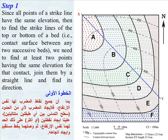Step 1. Since all points of a strike line have the same elevation, to find the strike lines for the top or bottom of a bed — that is to say, the contact surface between any two successive beds — we need to find at least two points having the same elevation for that contact. Join them by a straight line and find its direction.